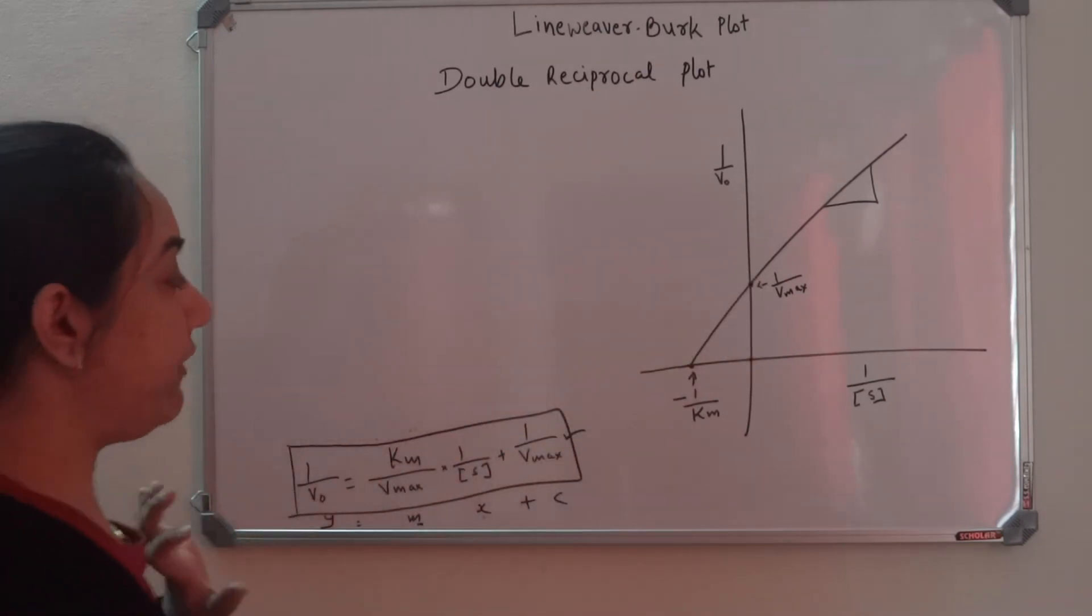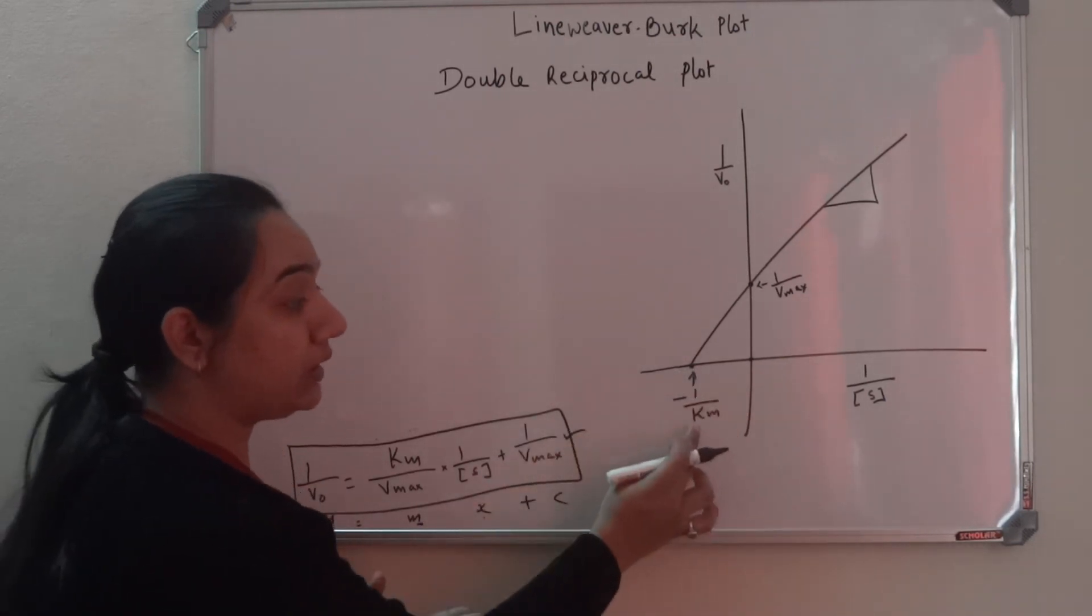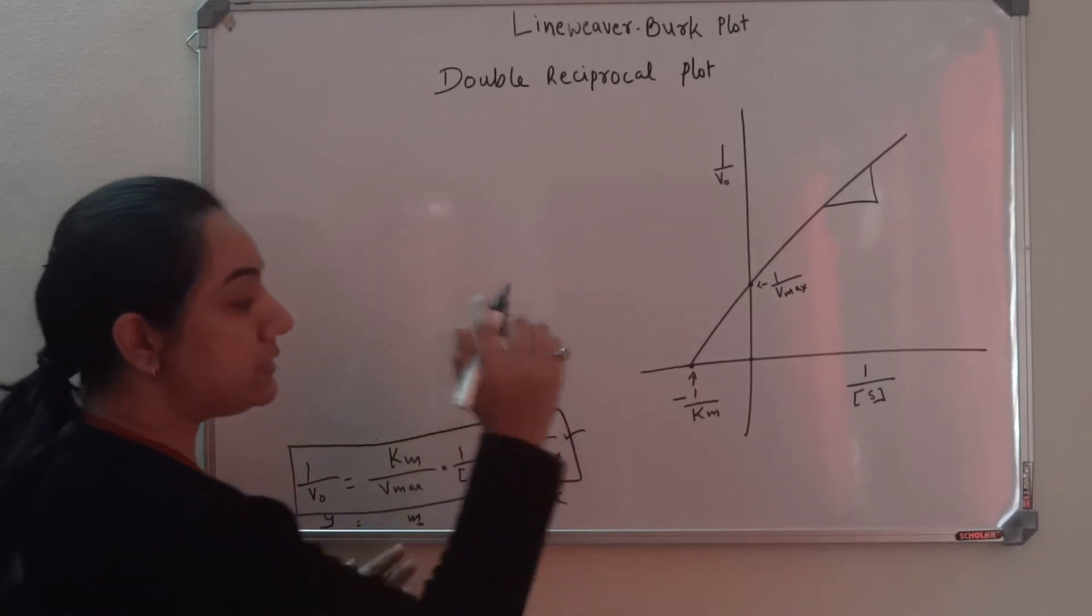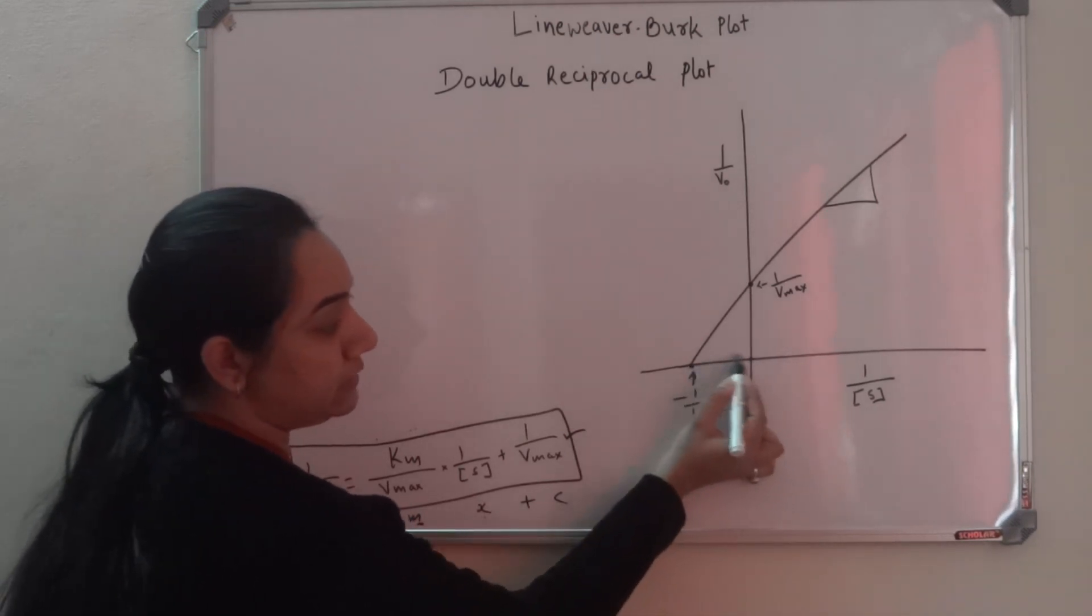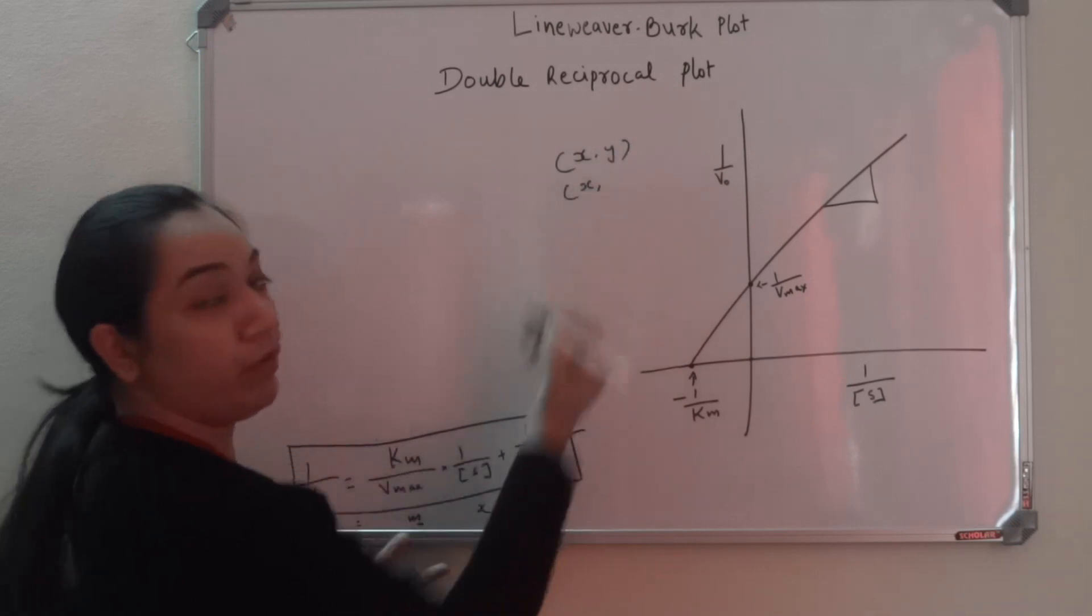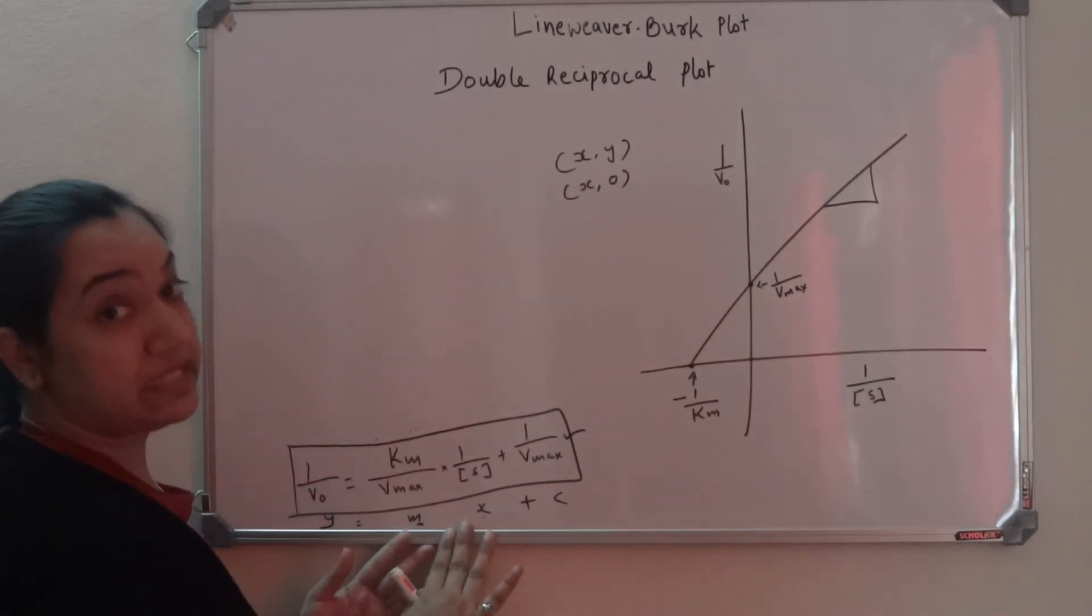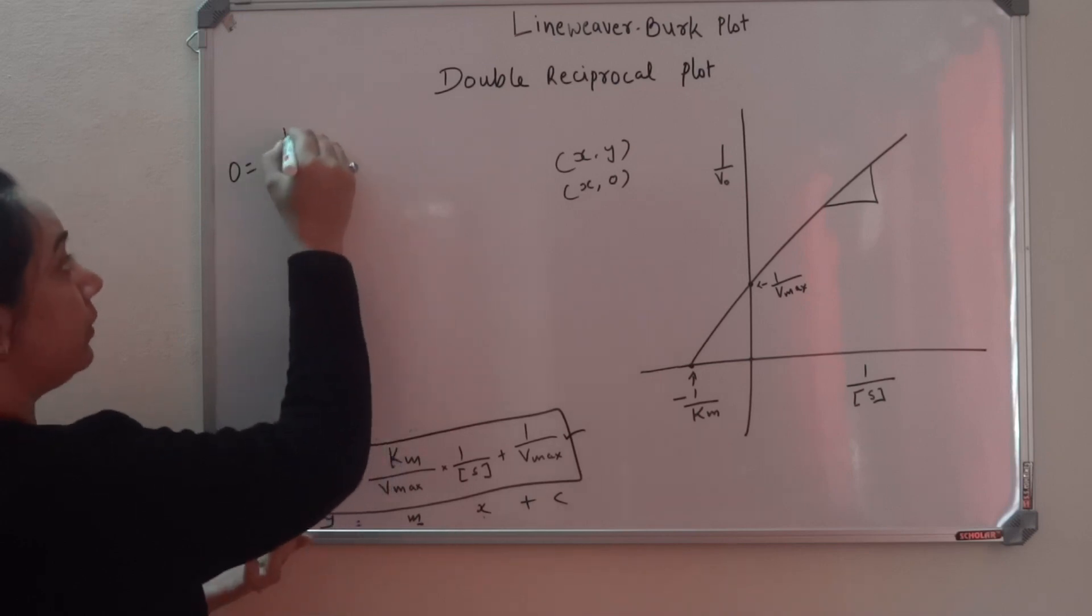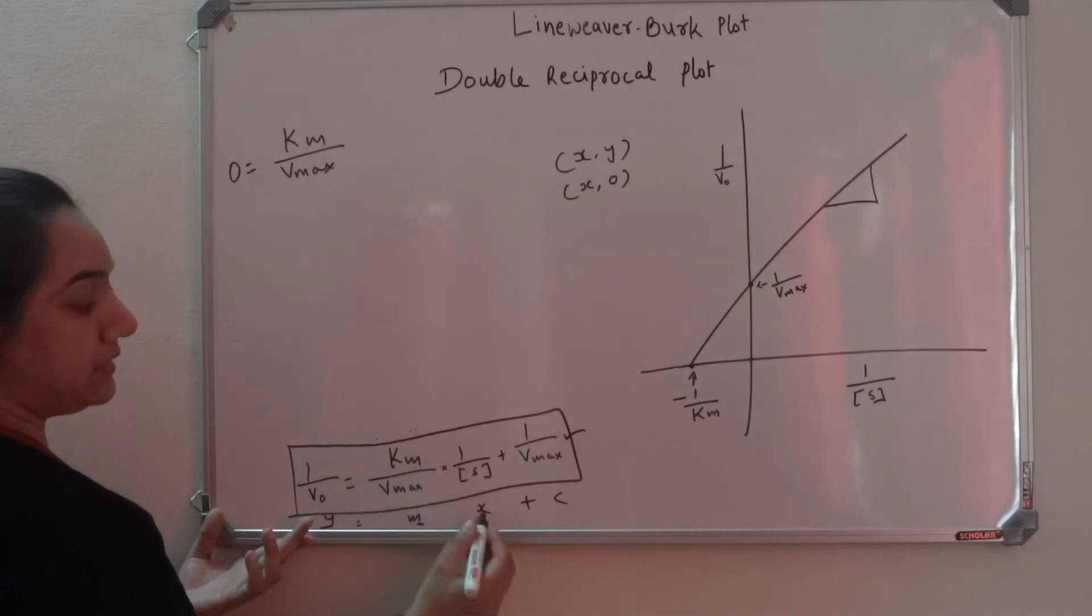If you want to find out this particular x, how I got this value of minus 1 by Km: for this x point, my y coordinate is 0. I can see for this x, my y is 0. So when we write x and y, I don't know what my x is - I want to find out - but the y is 0. Let's put this value in this equation and see what we get.